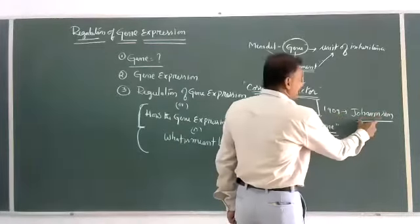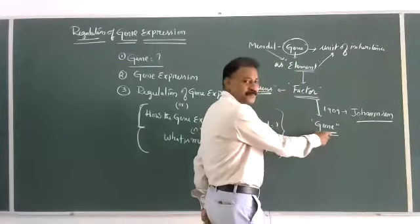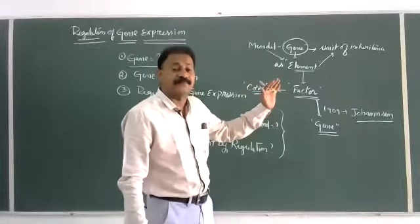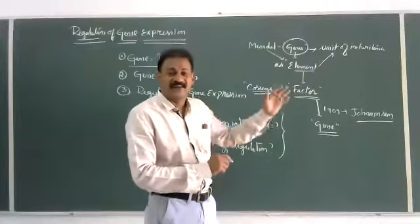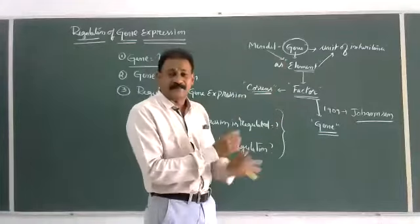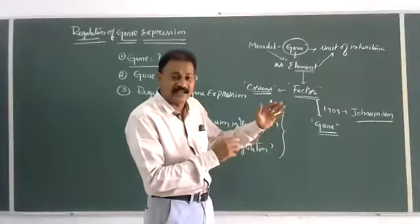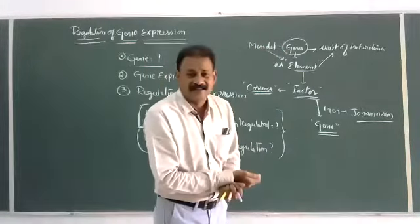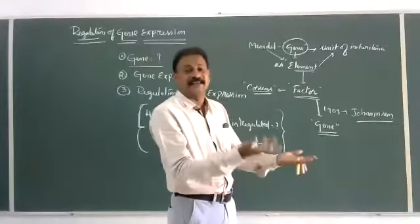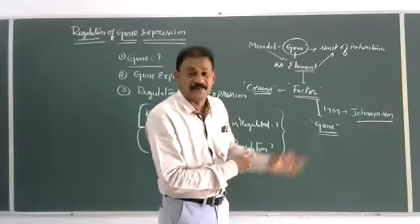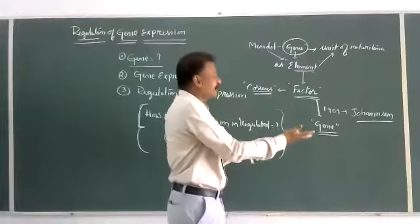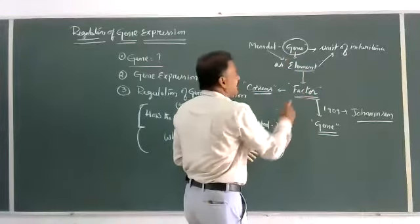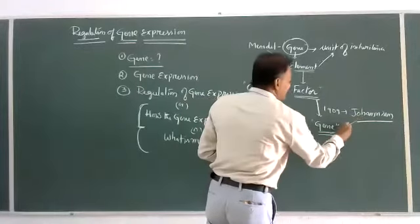The term 'gene' was given by Johansson in 1909. Johansson coined the term gene for the first time. So the definition of gene goes on changing based upon research in the field of genetics — a science that has developed from the days of Mendel to the present day, taking dimensions of molecular biology, cytogenetics, applied genetics, genomics, proteomics, and bioinformatics. Element became factor, and factor became gene.